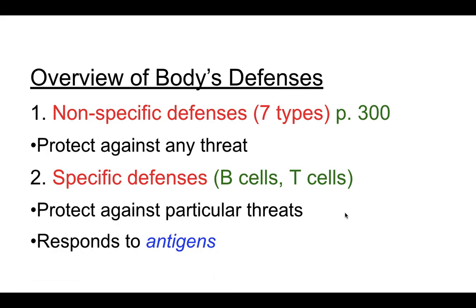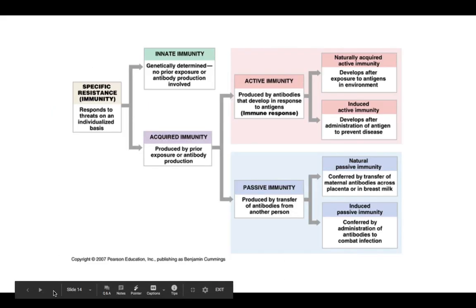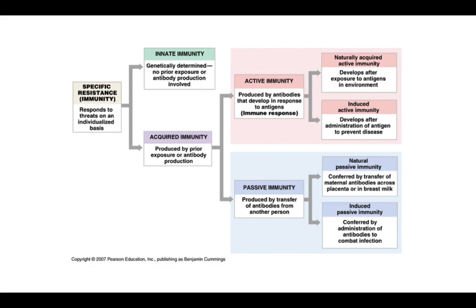You've probably all had the chickenpox vaccination — your generation was lucky. My generation had to actually get chickenpox, but once you get it, you won't get it again because your body builds up immunity to that particular antigen. When it comes to specific immunity, there's some you're just born with and some you acquire during your lifetime. Innate immunity — the word innate means born with — is genetically determined, with no prior exposure or antibody production involved.